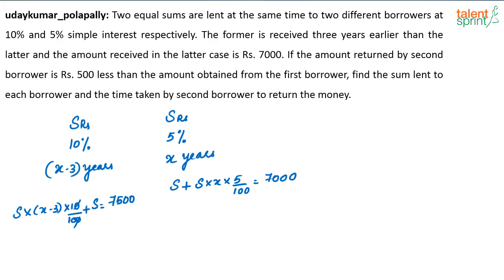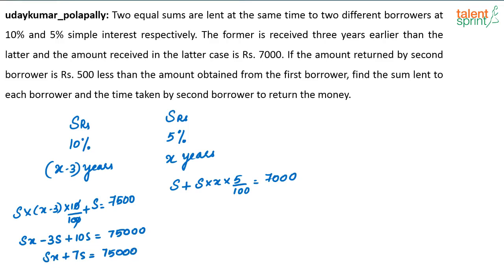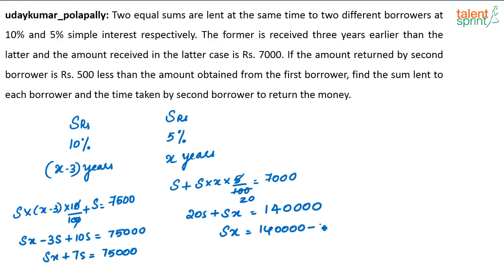After simplification, you have SX minus 3S plus 10S equals 75000, or SX plus 7S equals 75000. For the first equation, the factor is 20, so you have 20S plus SX equals 140000. From this, SX equals 140000 minus 20S.